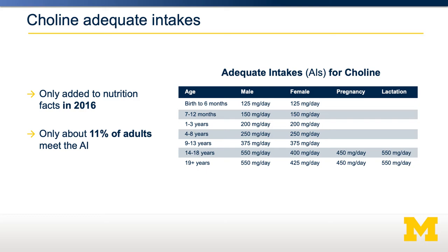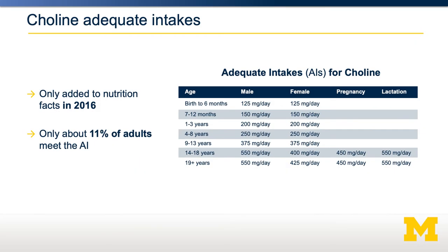Furthermore, only about 11% of adults are thought to meet the adequate intake for choline, which provides some controversy. If only 11% of people meet the adequate intake for choline, does that mean we're all choline deficient? Does that mean we all have those phenotypes? Well, not necessarily. It turns out about half the population needs to ingest choline from their diet, and the other half can make choline themselves.